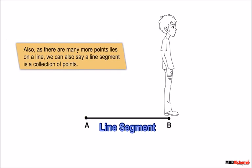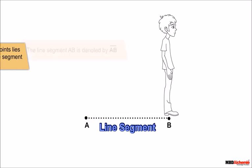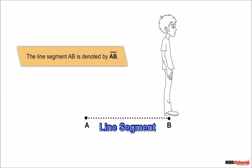Also, as there are many more points lying on a line, we can say a line segment is a collection of points. The line segment AB is denoted by a line over the top of the letters, like this.